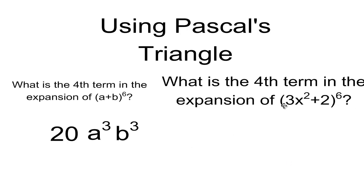And so here's a more complicated binomial expansion because the two terms are slightly different. So instead of what's the fourth term in the expansion of a plus b to the exponent 6, I'm asked what's the fourth term in the expansion of 3x squared plus 2 to the exponent 6?